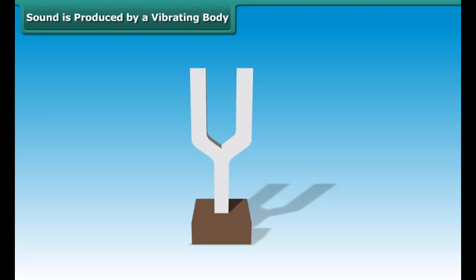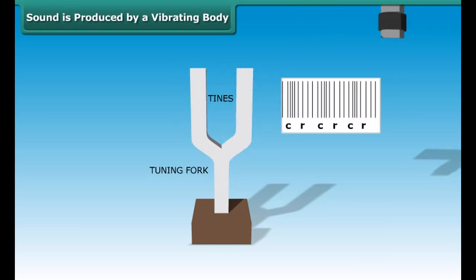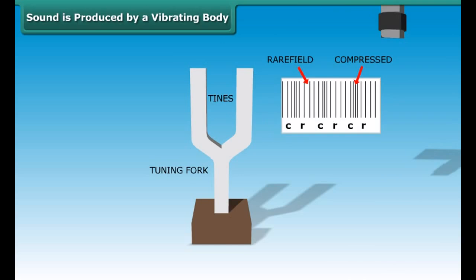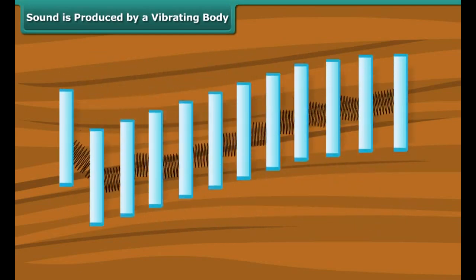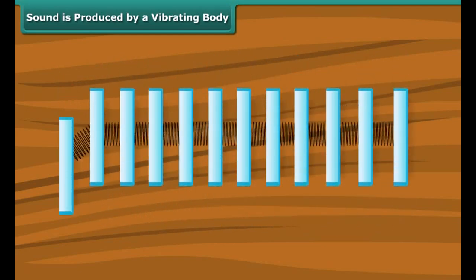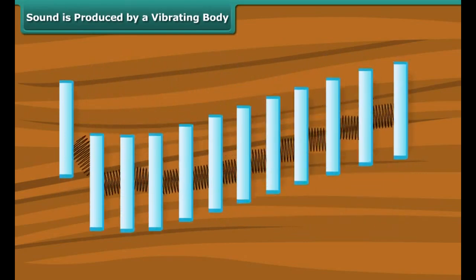Sound is produced by a vibrating body. Sound is a pressure distribution that moves through a medium in the form of mechanical waves. When a force is exerted on an atom, it moves from its rest or equilibrium position and exerts a force on the adjacent particles. These adjacent particles are moved from their rest position, and this continues throughout the medium.